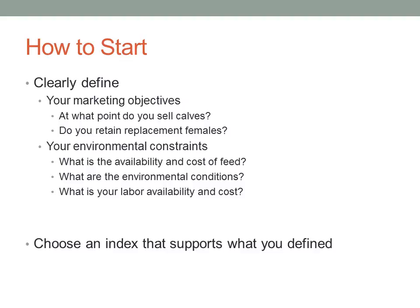You also need to have a full accounting for your environmental constraints — the availability and cost of feed, and the environmental conditions in which you rear cattle. Are you in a climate that's extremely cold versus extremely hot, extremely wet versus extremely dry? And what's your availability of labor and the cost of that labor? All too often as beef cattle producers, we assume our labor doesn't come with a cost, but it most certainly does. If labor is abundant, maybe calving ease isn't as critical. But if labor is sparse, the ability for calves to be born unassisted is absolutely critical. Once you define these things, you can choose an economic index that supports your marketing objectives and environmental constraints.